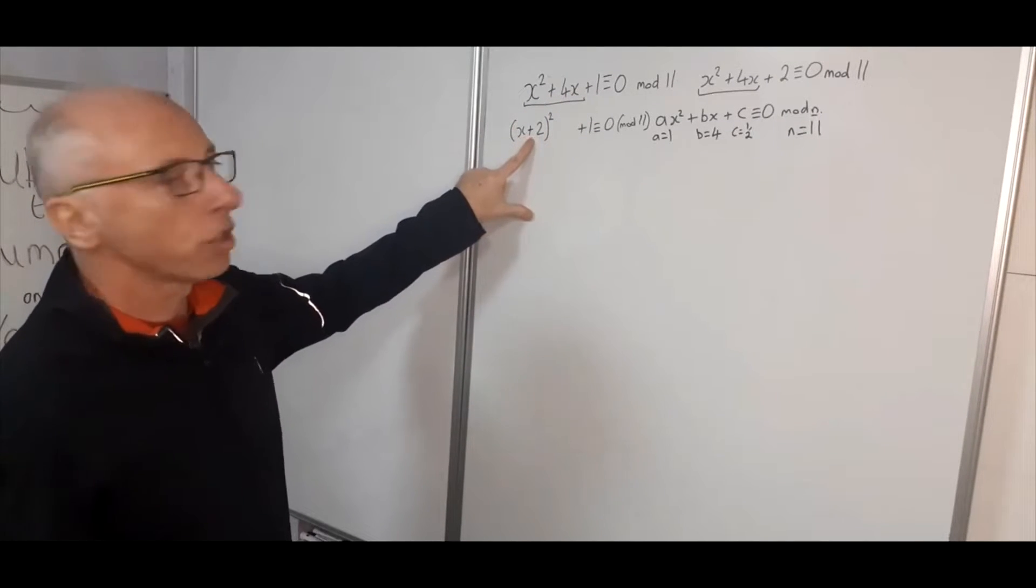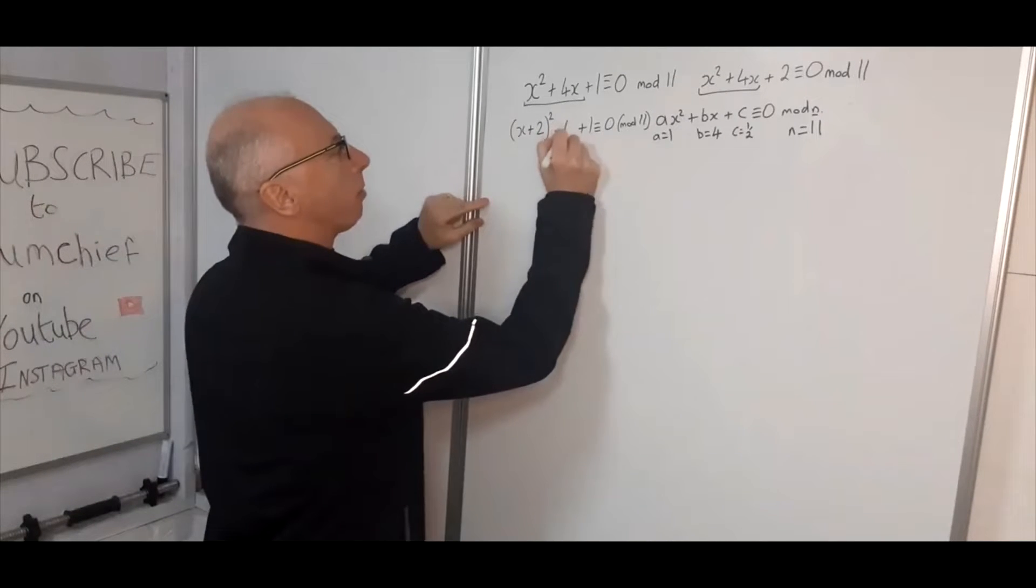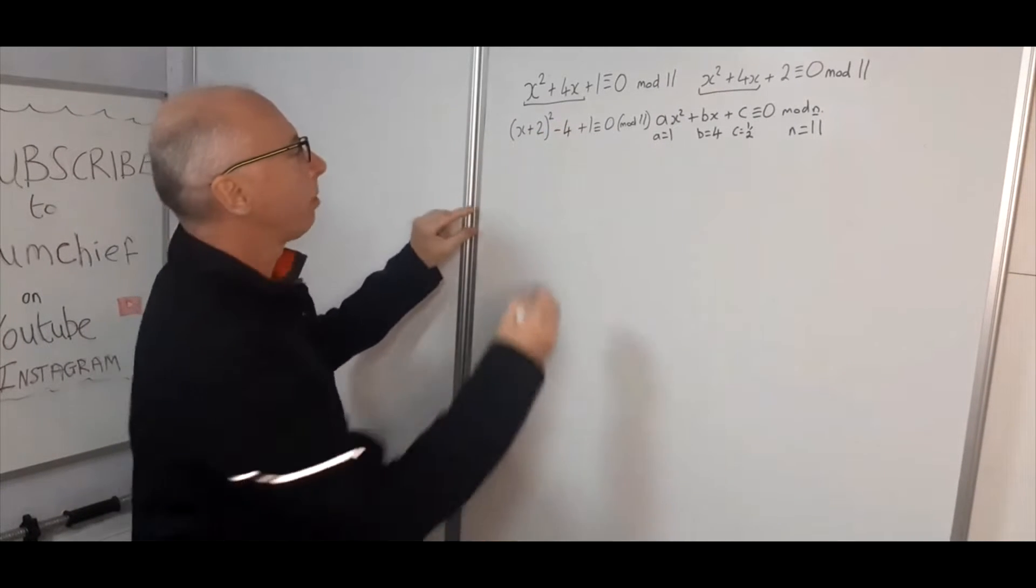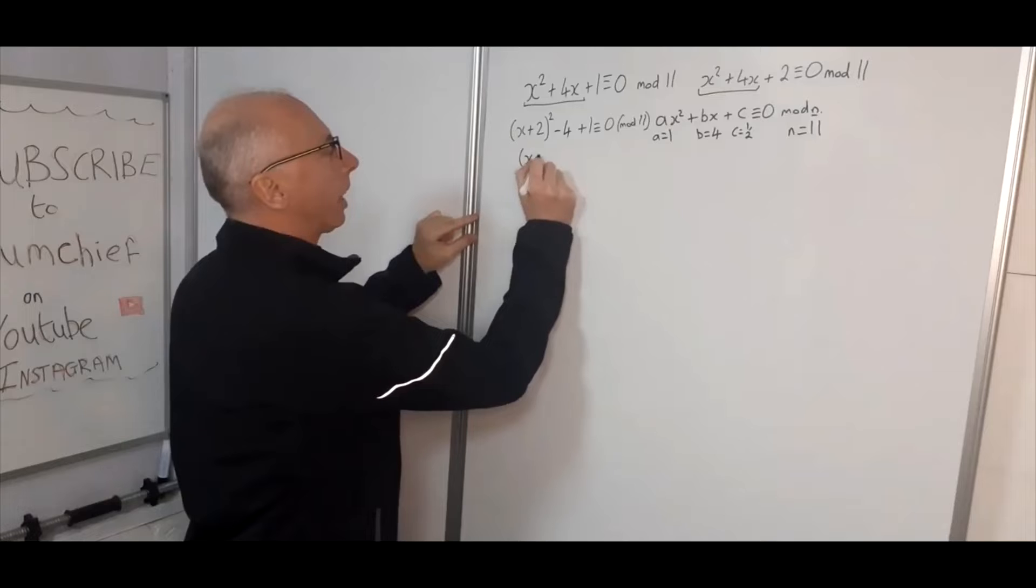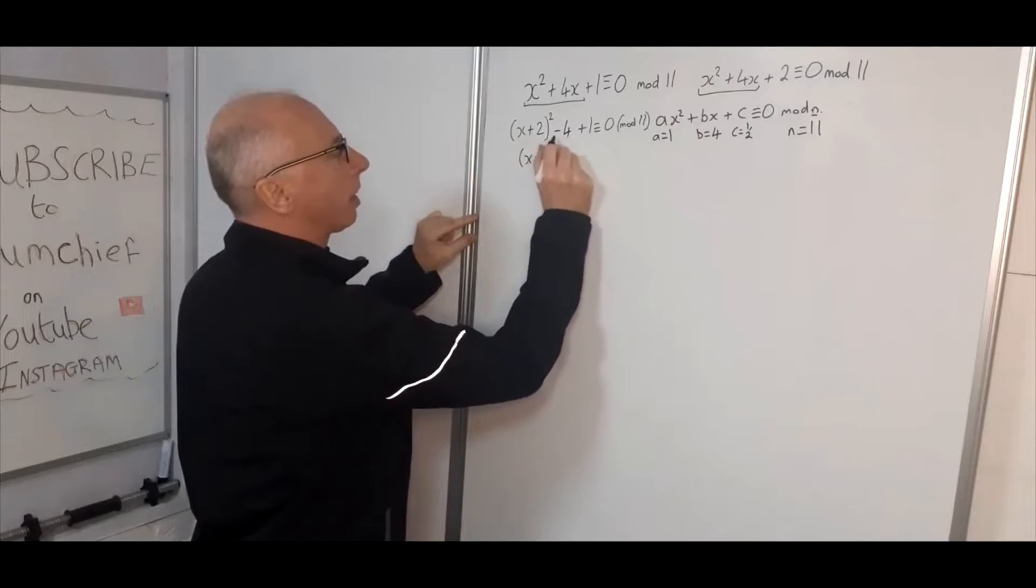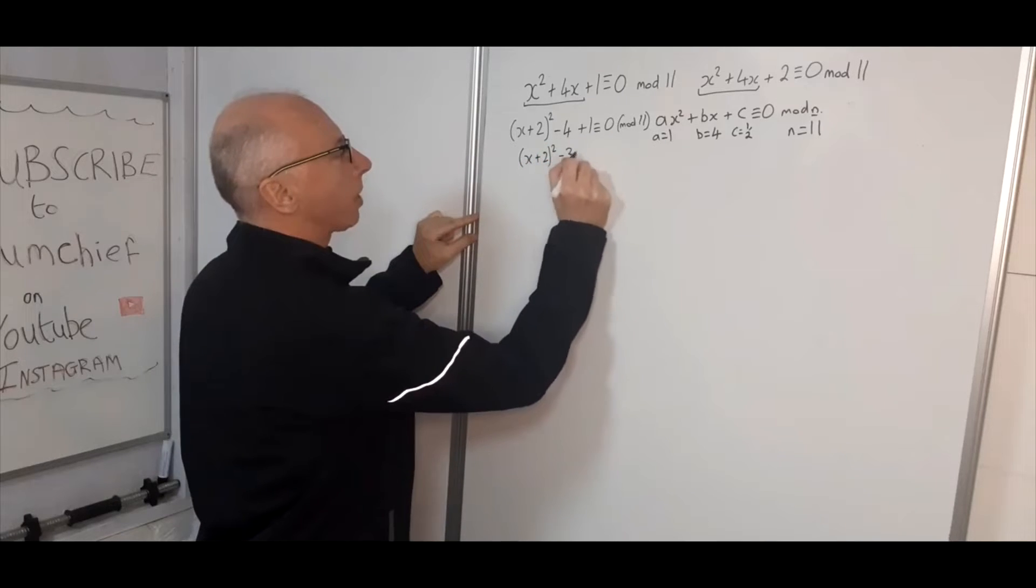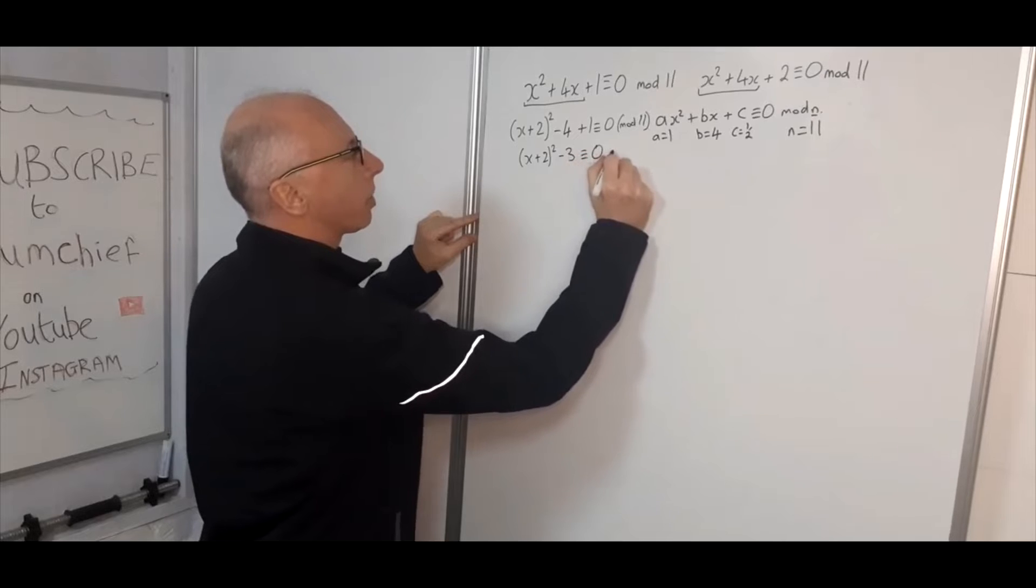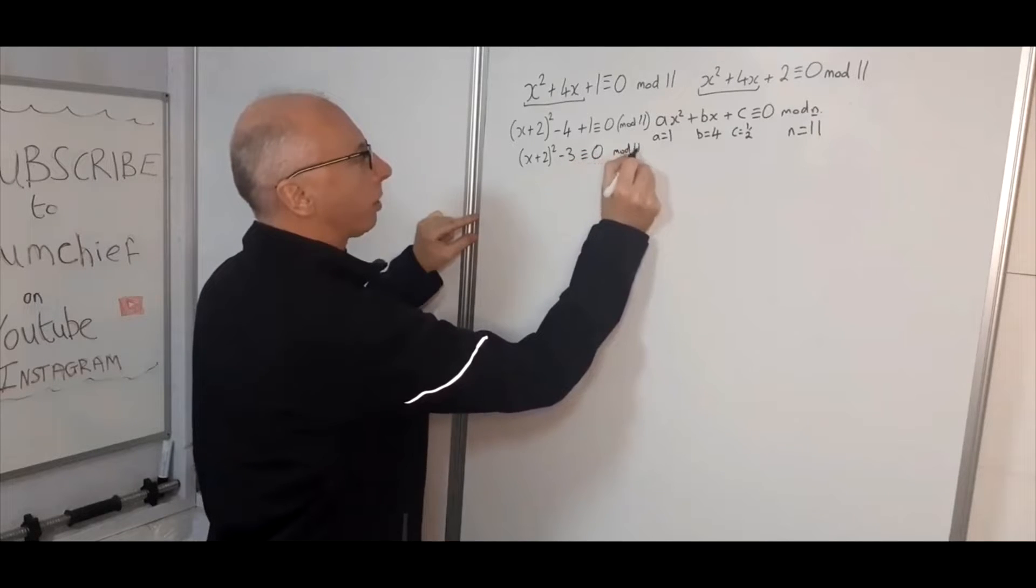Okay now as you know from elementary maths this has now changed the value of the left hand side of this congruence. So we now need to subtract 4 so minus 4, so just simplifying up a little bit x plus 2 squared minus 4 plus 1 is minus 3 is congruent with 0 modulo 11.